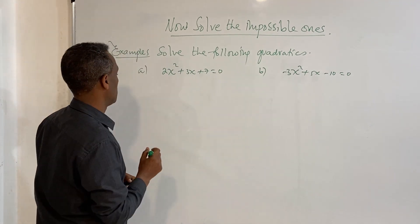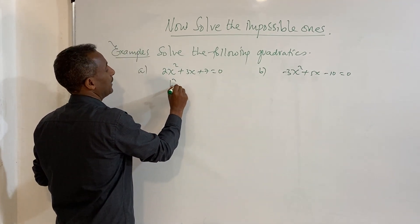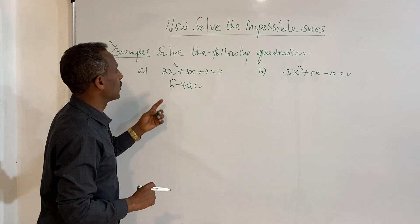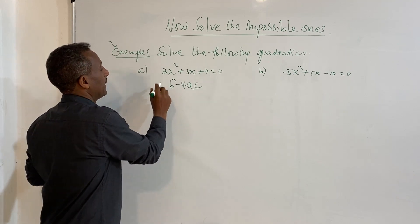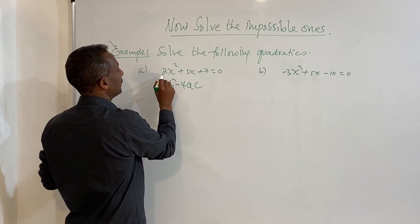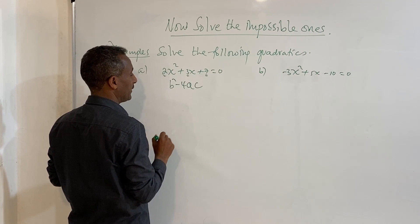What are the equations? We check b squared minus 4ac, the discriminant. If it is solvable in the set of real numbers, here we are going to have a is 2, b is 3, c is 7.